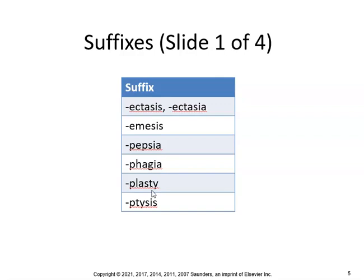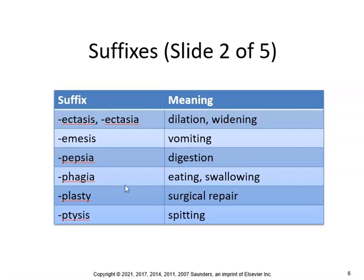Plasty — rhinoplasty is surgical repair of the nose. Ptysis — hemoptysis would be spitting up blood. So again: ectasis is dilation or widening, emesis is vomiting, pepsia is digestion, phagia is eating or swallowing, so dysphagia would be difficulty eating or swallowing, plasty is surgical repair, and ptysis is spitting — so hemoptysis means spitting up blood.